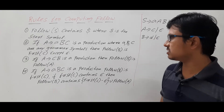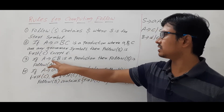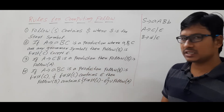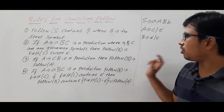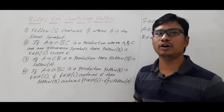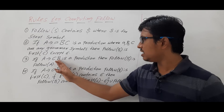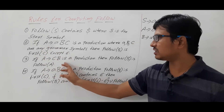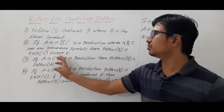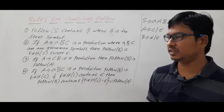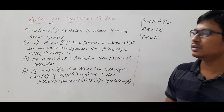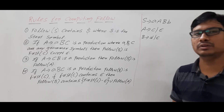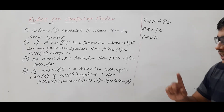If A determines C and B is a production, then FOLLOW of B is FOLLOW of A only. After B, nothing is following, so FOLLOW of B is FOLLOW of A. With these rules I will discuss one example for better understanding.